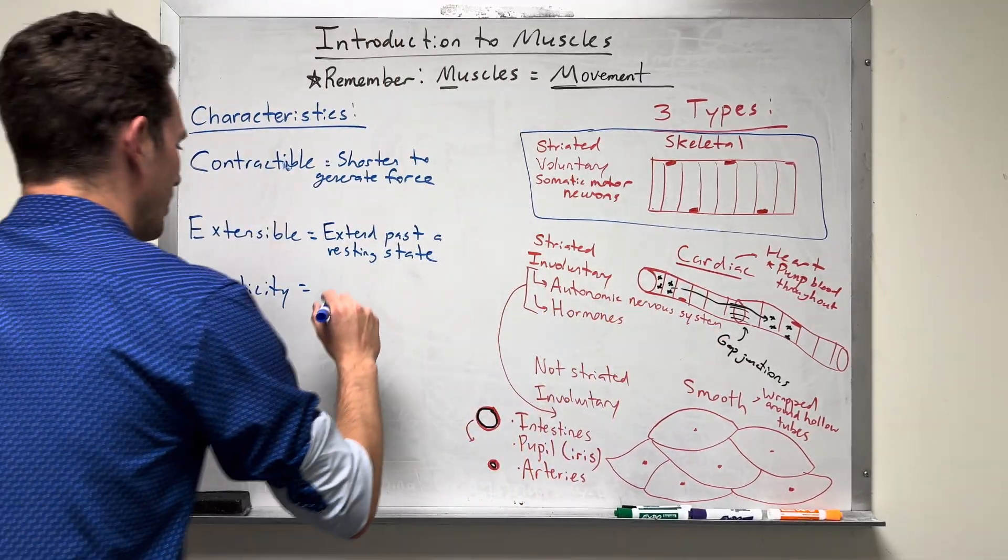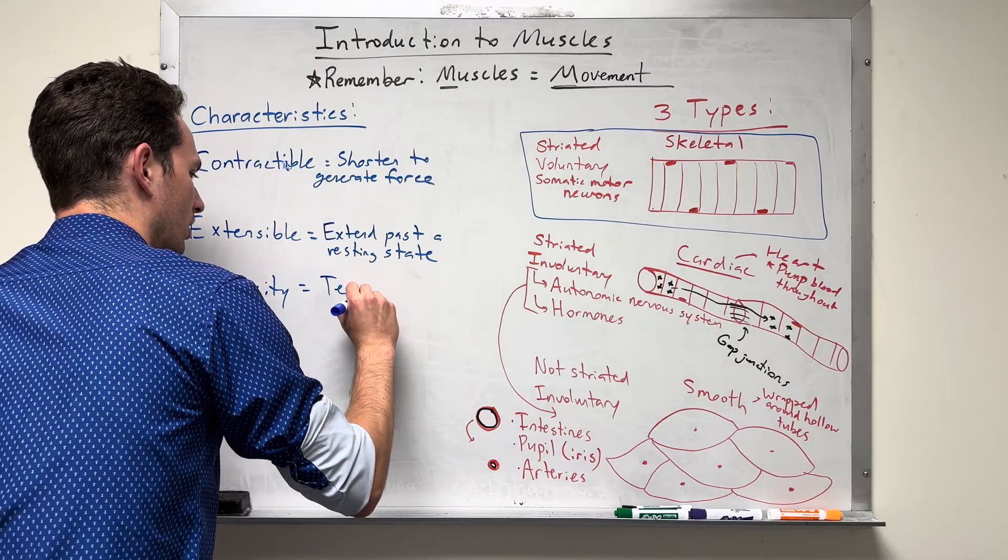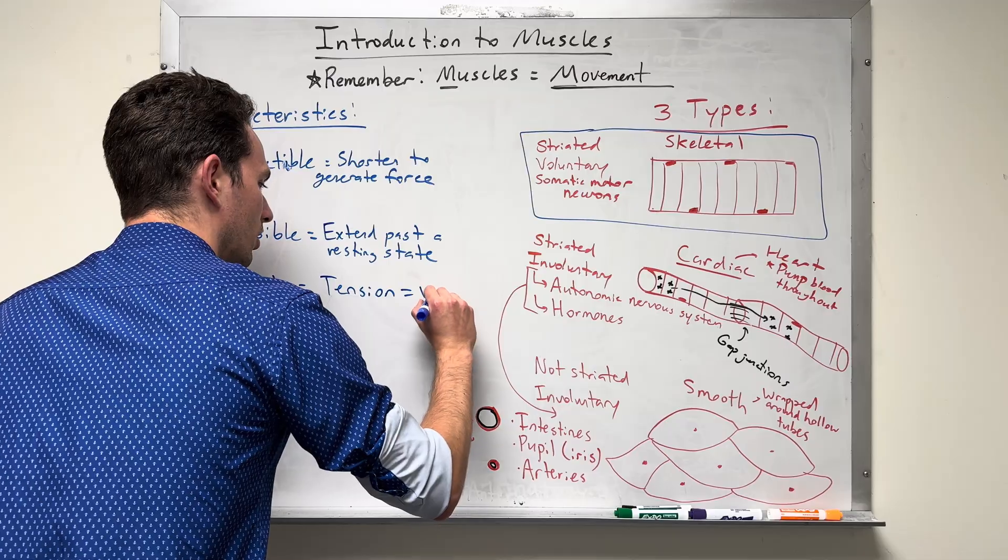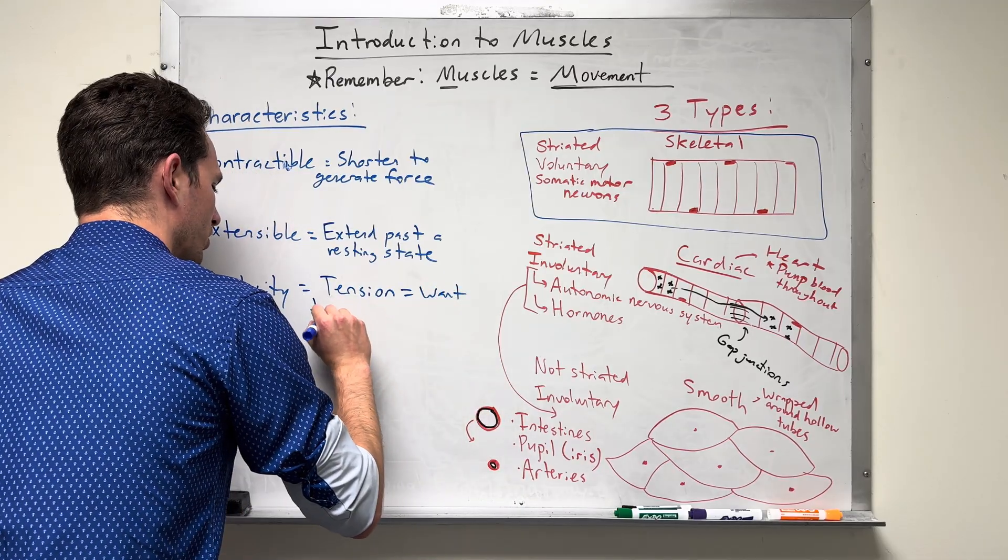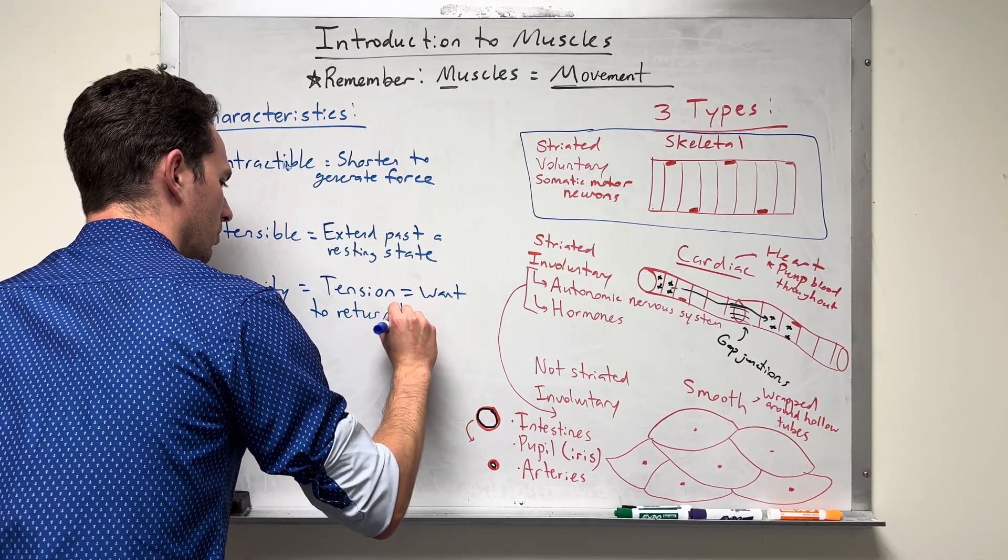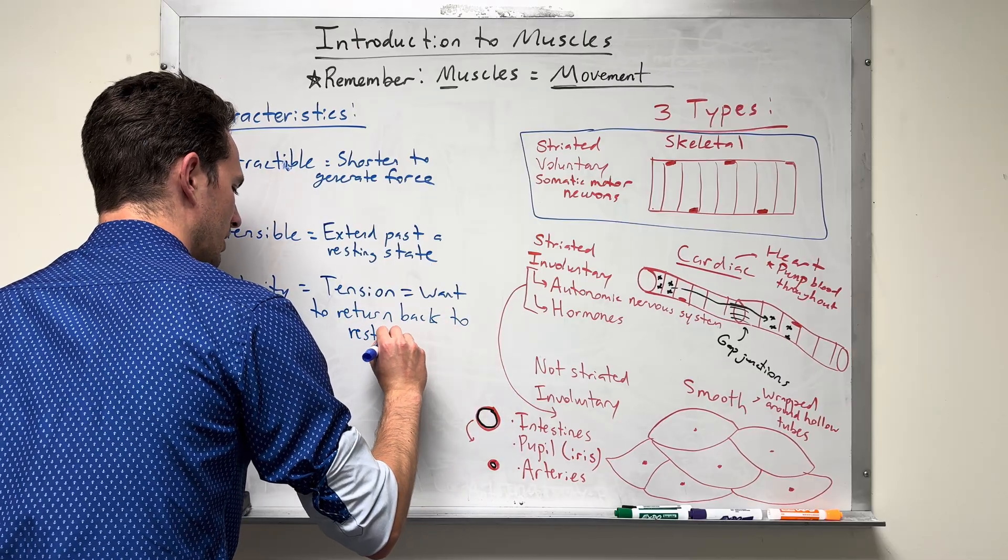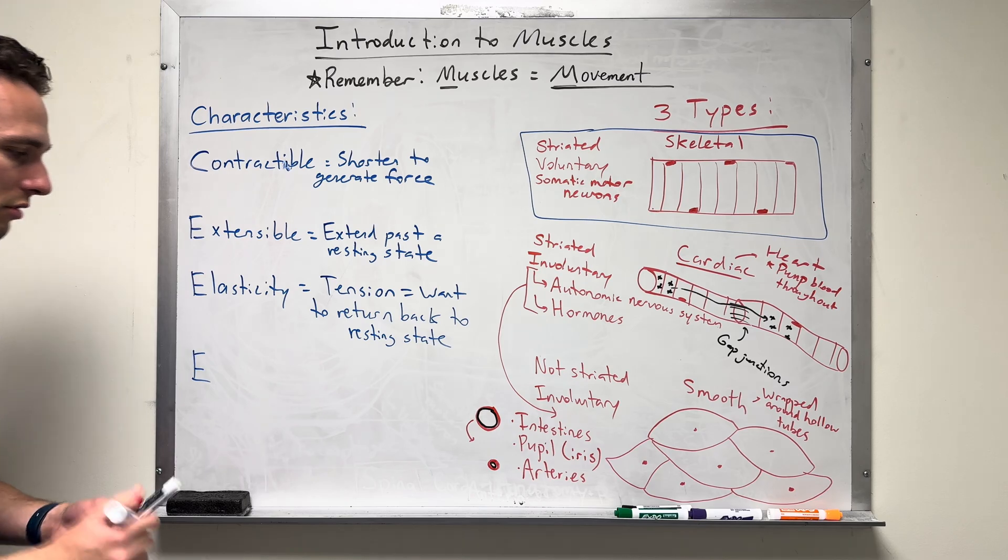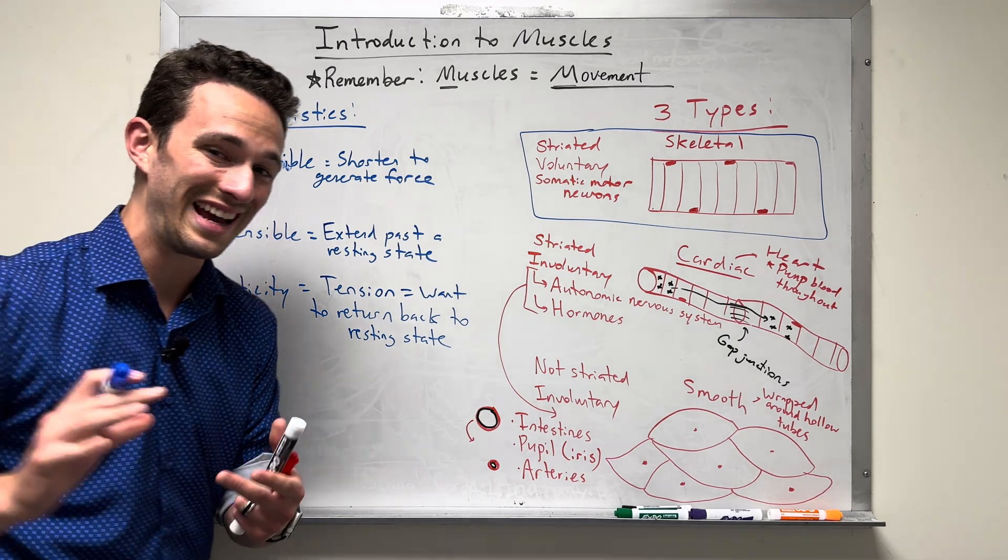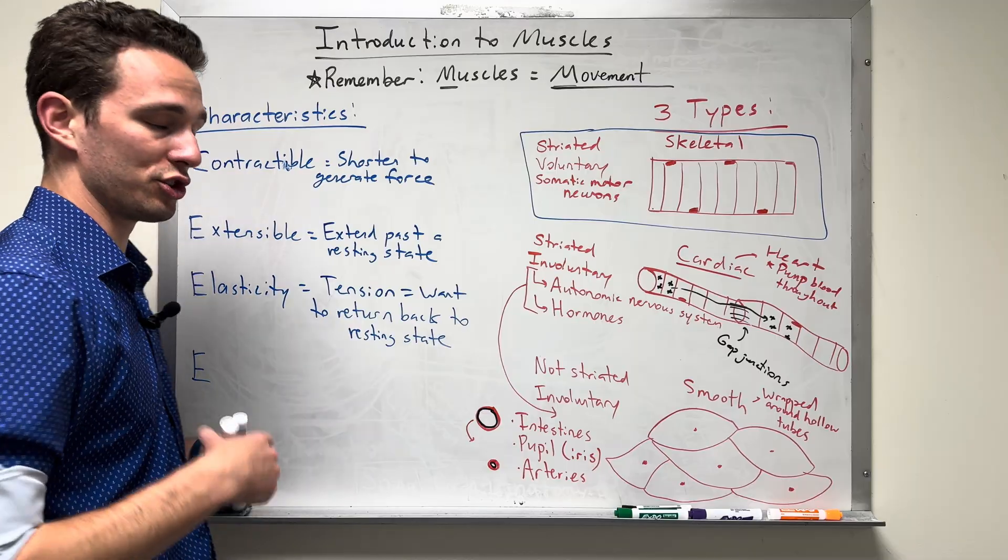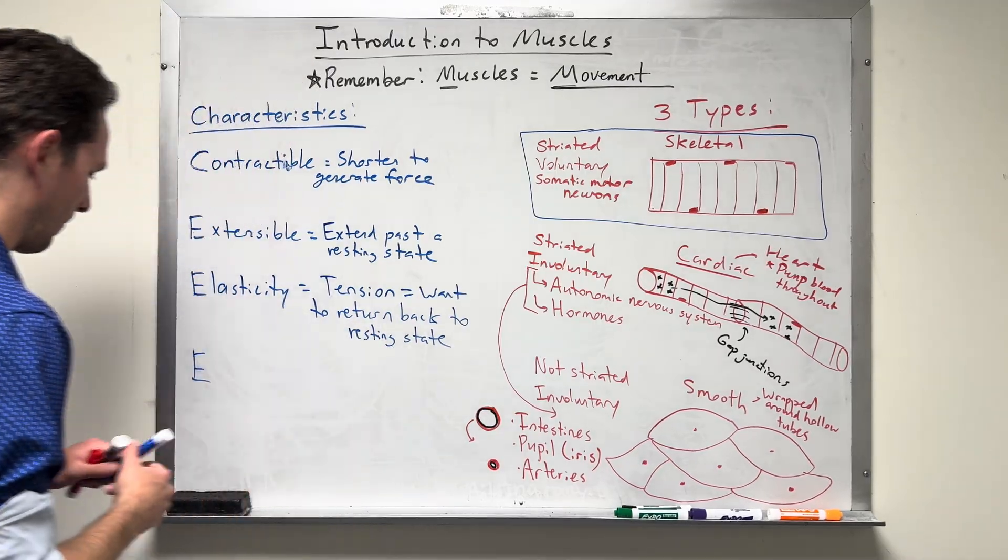So elastic means there's a tension present where we want to return back to the resting state. Very similar to a rubber band, and there's going to be a protein called titin, funny name, that's going to allow that muscle to be elastic.